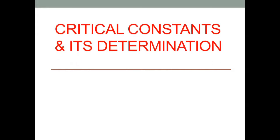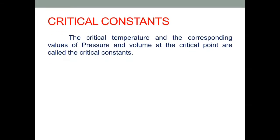In this video, we will see what are critical constants and how to determine the critical constants. The critical temperature and the corresponding values of pressure and volume at the critical point are called the critical constants of a gas. There are three critical constants: the critical temperature Tc, critical pressure Pc, and critical volume Vc.